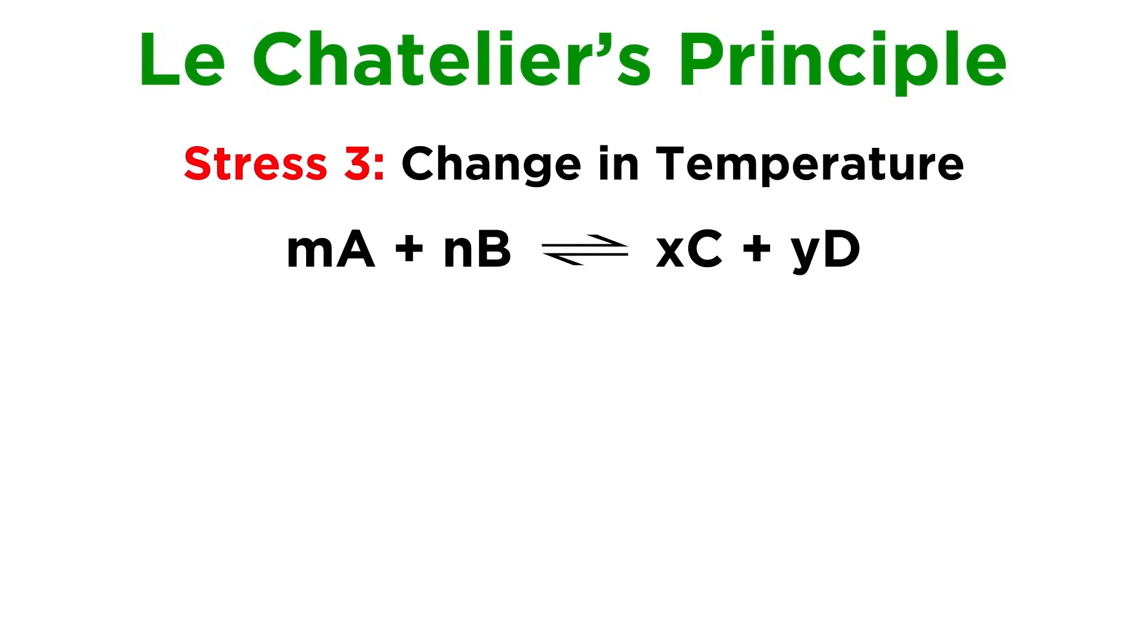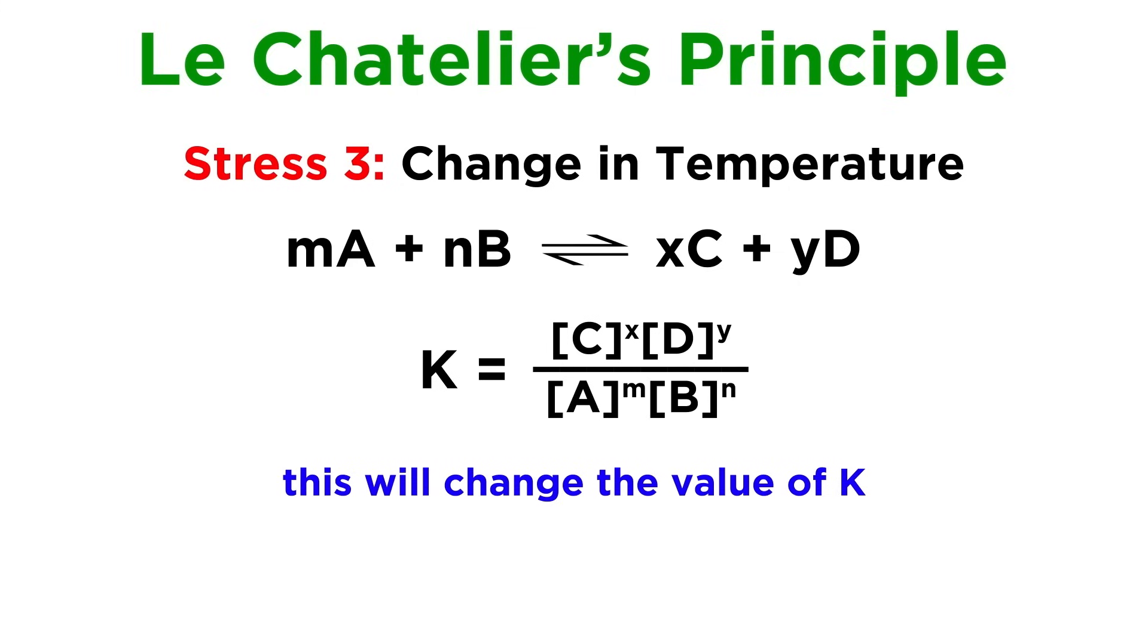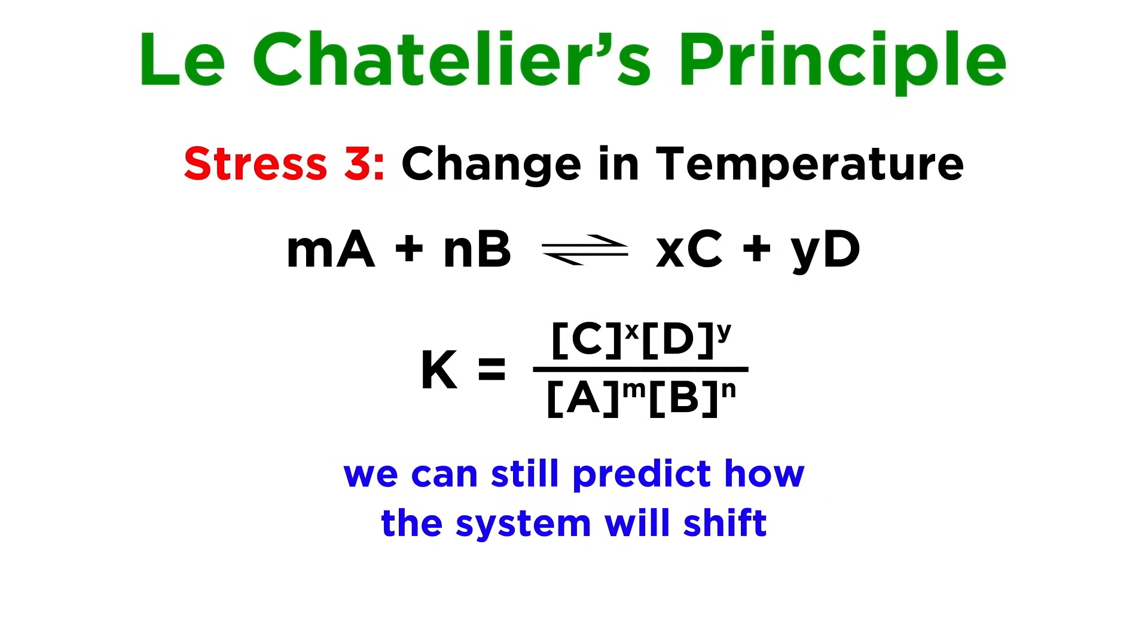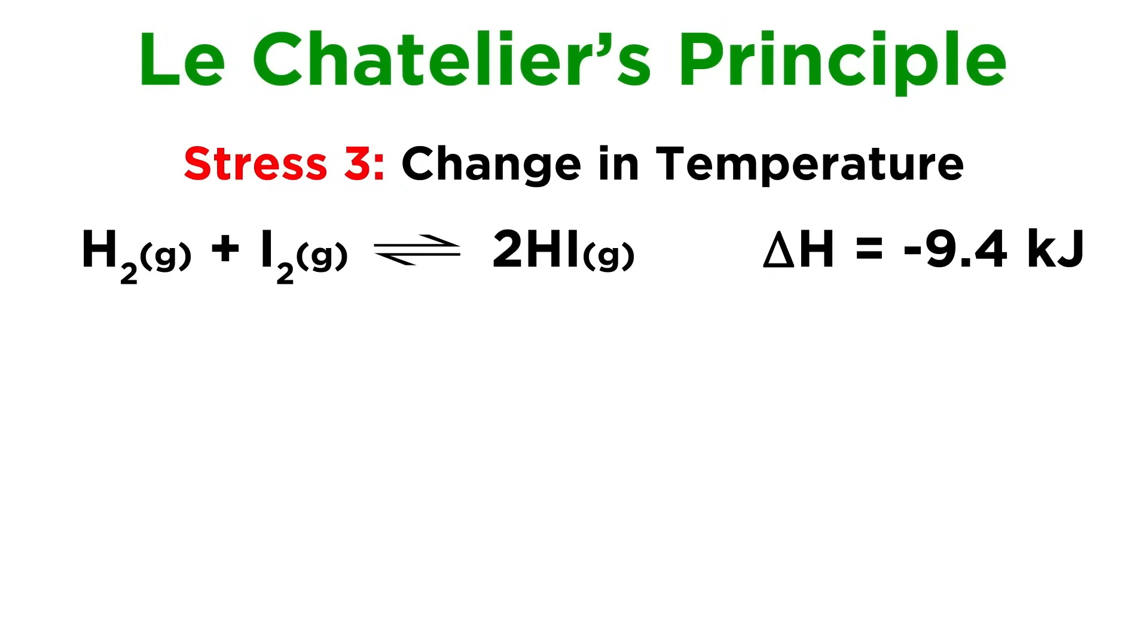The third stress that can be placed on a system is a change in temperature. Unlike concentration and pressure, changing the temperature will actually change the value of the equilibrium constant, but even so, we can qualitatively predict the direction the equilibrium will shift when the temperature increases or decreases. The key is to look at the change in enthalpy of the reaction.